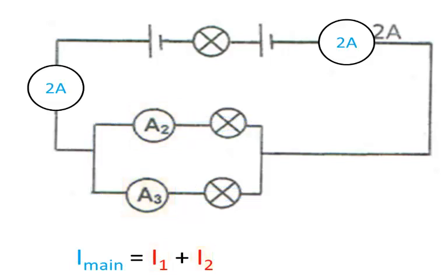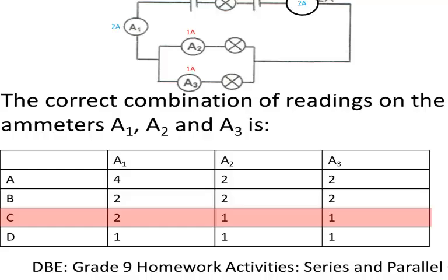Since the two branches are equally resistant, the same amount of current goes through each, 1 amp. So option C is the correct option. A1 2 amps, A2 1 amp, A3 1 amp.